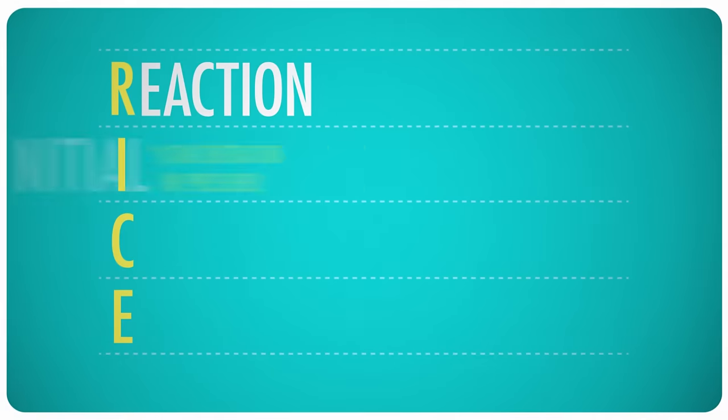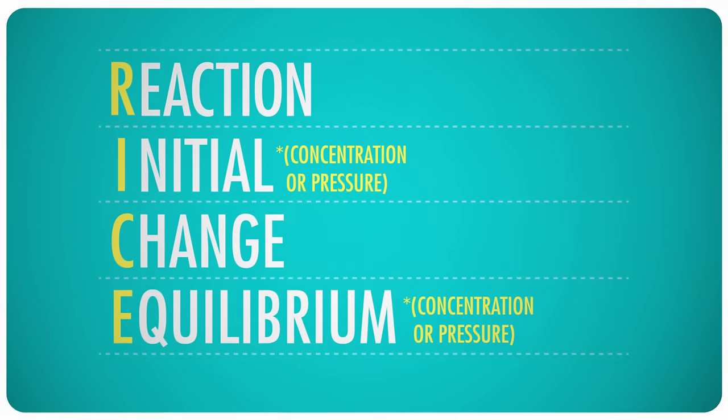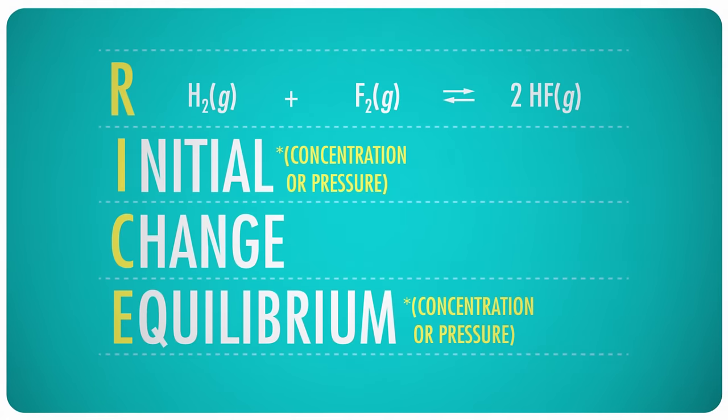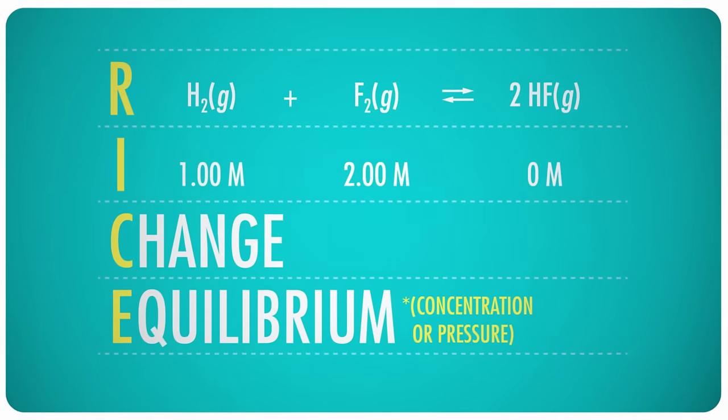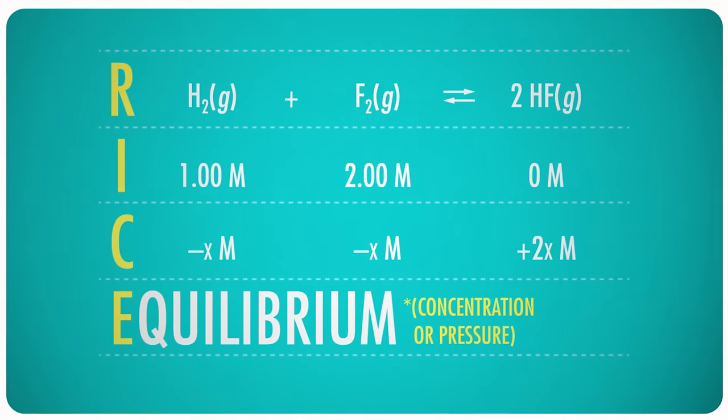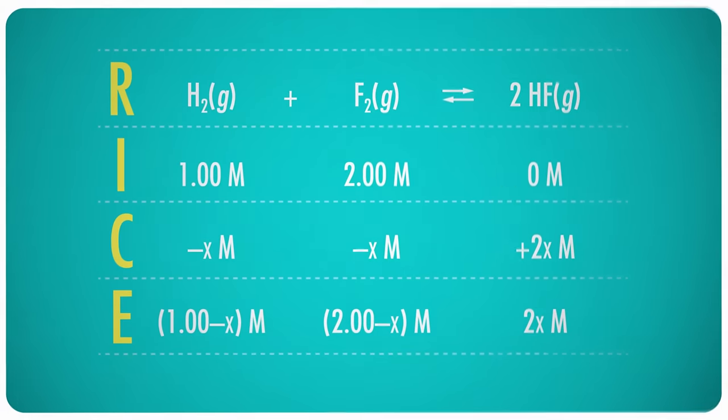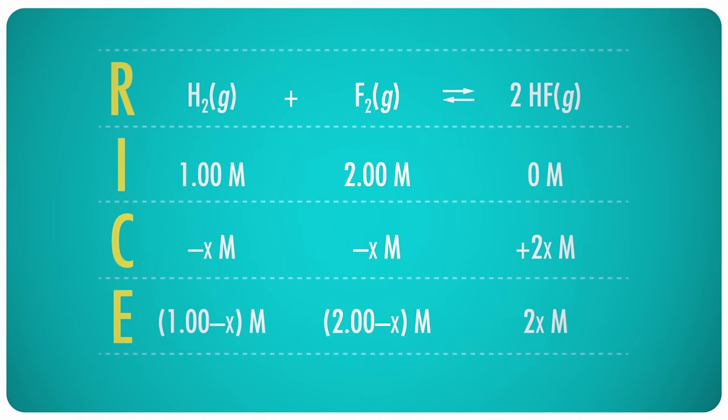This type of calculation is easiest using a format called a RICE table. RICE stands for Reaction, Initial, Change, and Equilibrium. On the R line, at the top of the table, we write the chemical equation of the reaction, leaving space between each part so we'll have room to add more information below. On the I line, we write the initial concentrations of each substance. Some of those will almost always be zero, since products generally aren't present until the reaction begins. The C line is where we map out how much of each substance will change during the reaction. We often don't know exactly how much this is until we do the math, so we start out with X where the amount is unknown. The E line is where we put the final result, how much of each substance will be present at equilibrium. Since the final amount is just the initial amount plus any changes that have occurred, this line is the sum of the initial line and the change line.